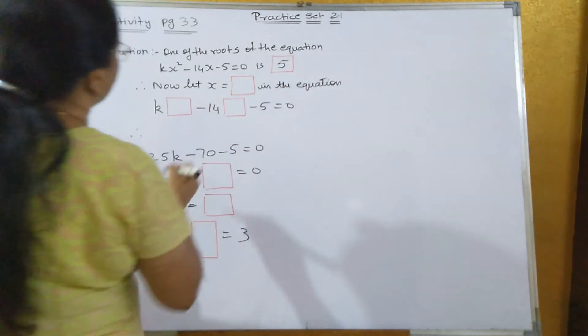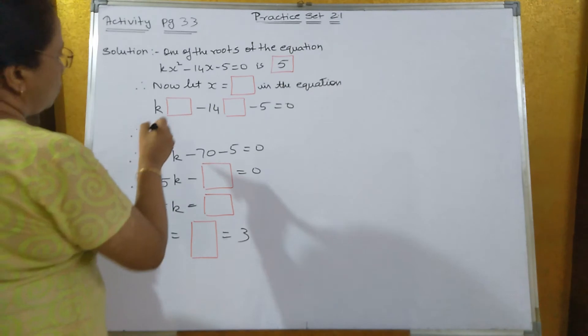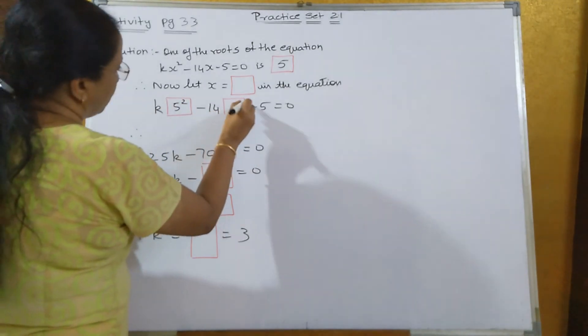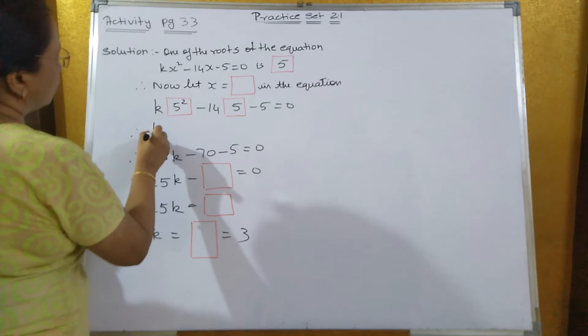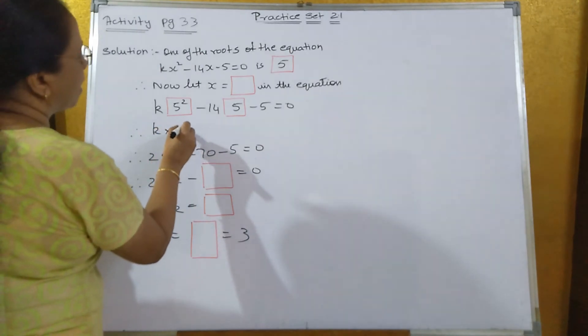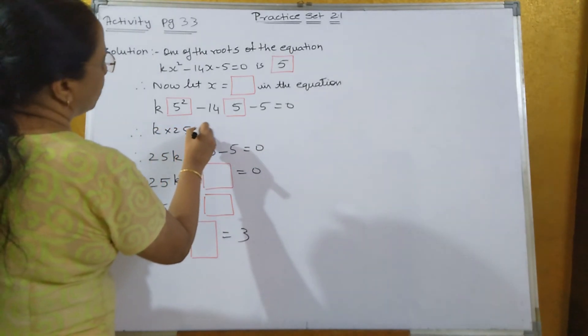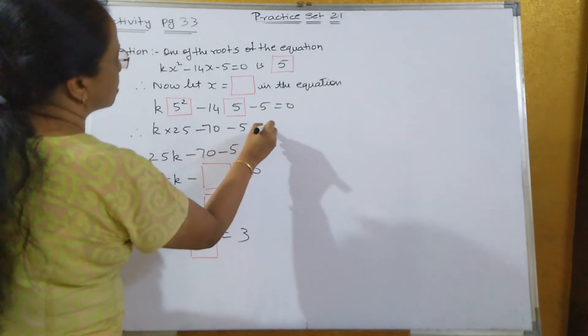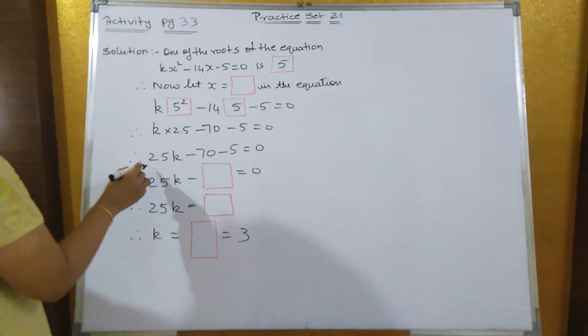So k into 5² minus 14 into 5 minus 5. So what you'll get? K into 25 minus 14 into 5 is 70 minus 5 is equal to 0. So 25k minus 70 minus 5 is equal to 0.